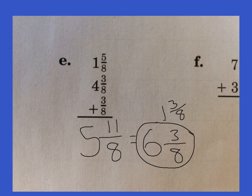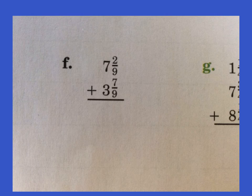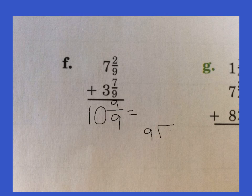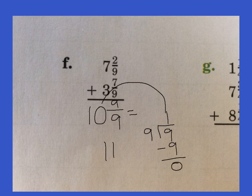We'll try F now. The more we practice it, the better we'll be at it. Our denominator is 9. Two plus 7 is 9, and 7 plus 3 is 10. We need to change this — 9 goes into 9 one time, 9 times 1 is 9, we get 0. So we get 1 here. We need to take that 1 and add it to the 10. And we now have our answer: 11.